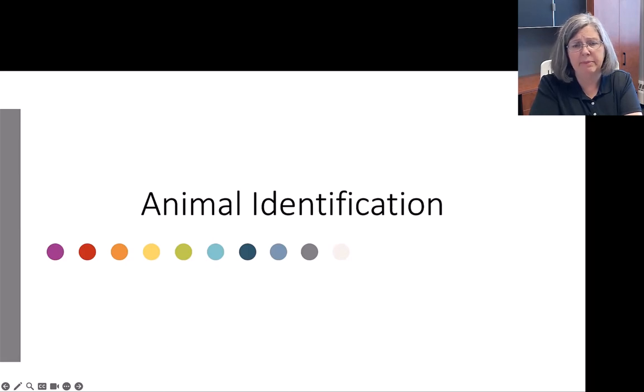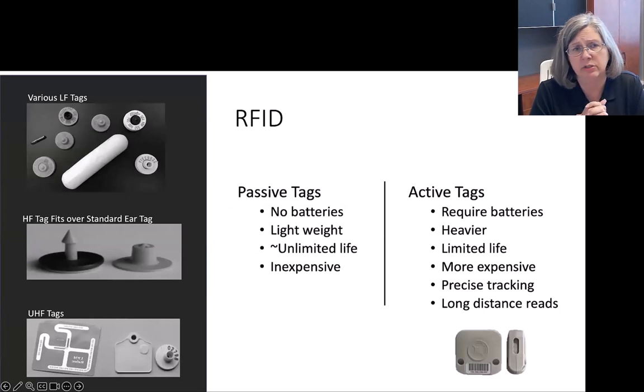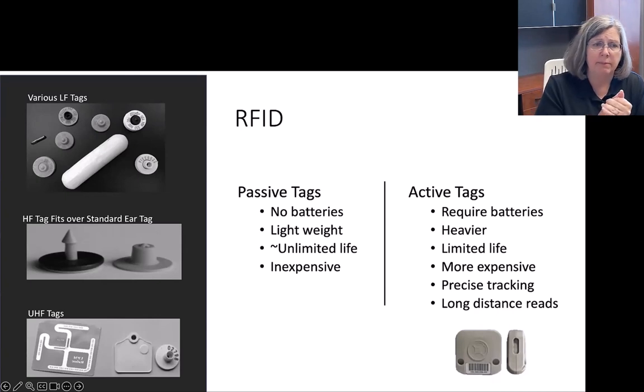Animal identification we can do a lot of different ways, but in pigs it's tricky because they don't want tags in their ears. In cattle we do visual tags and we also do RFID tags, and for our systems we have also gone to looking at RFID. RFID is radio frequency identification and there's a lot of different RFID tags available. There's two classes: passive tags and active tags. Passive tags are the ones that you see mostly in cattle. They are lightweight, they don't have a battery, they have unlimited life in quotes, and they're relatively inexpensive, about two to three dollars a tag.